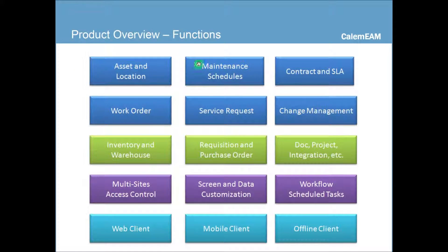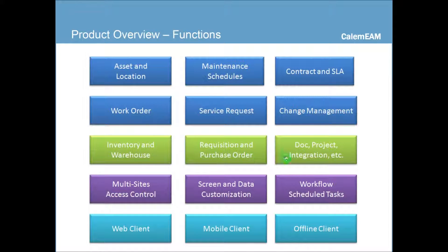Just a quick overview of functions for Calum Enterprise. The first two rows in blue are the maintenance functions, including assets, locations, the schedules you can define for maintenance, contract and their service level agreements, work orders, service requests, and change management. The third row covers the inventory and warehouse functions, and requisition and purchase orders to manage inventory, as well as other useful modules like document, project, integration, and others.